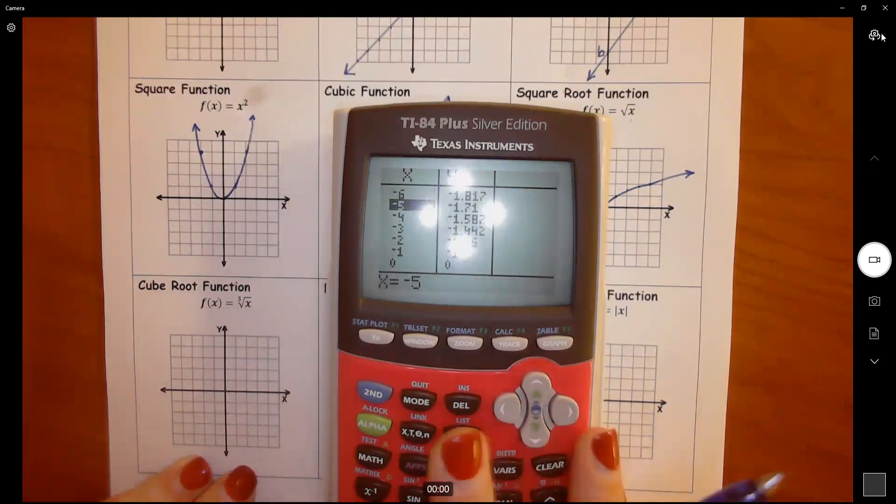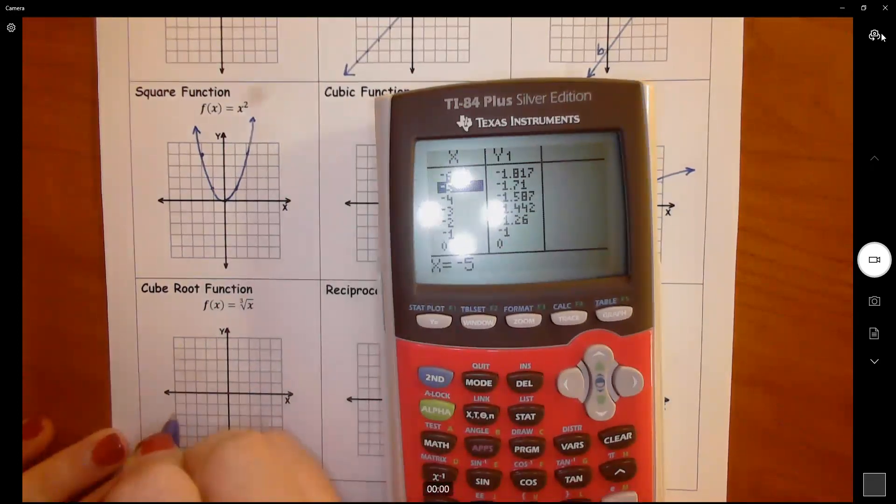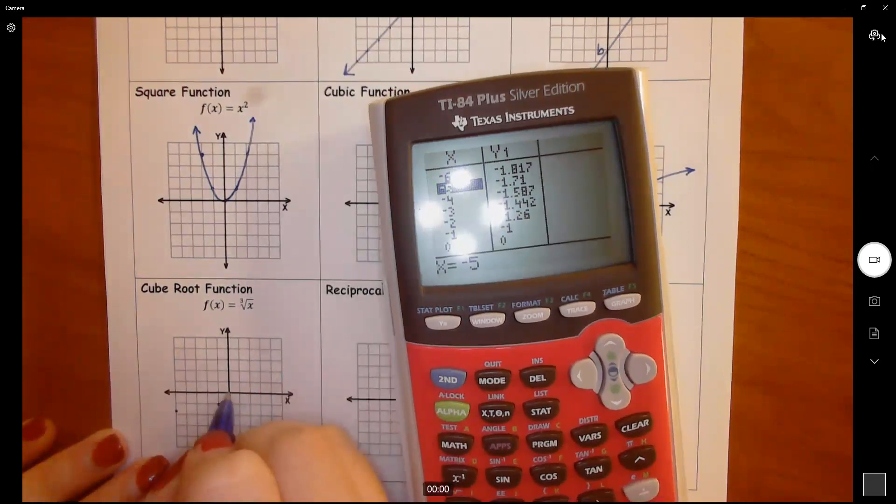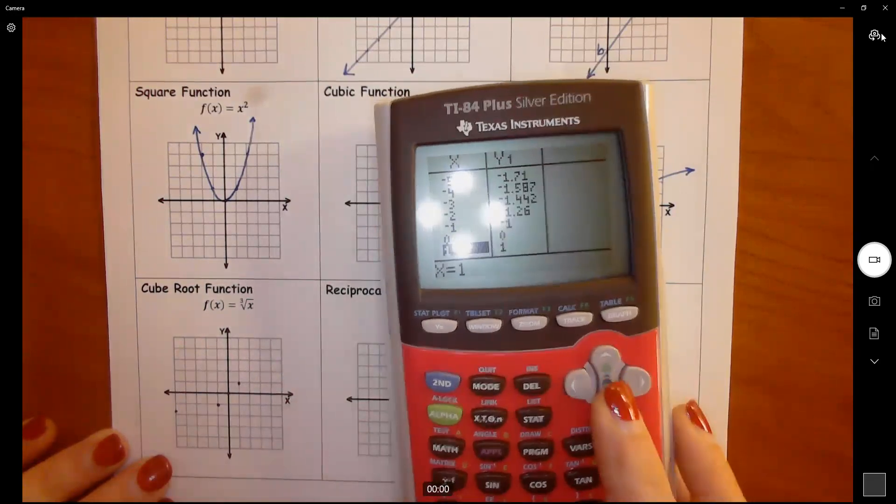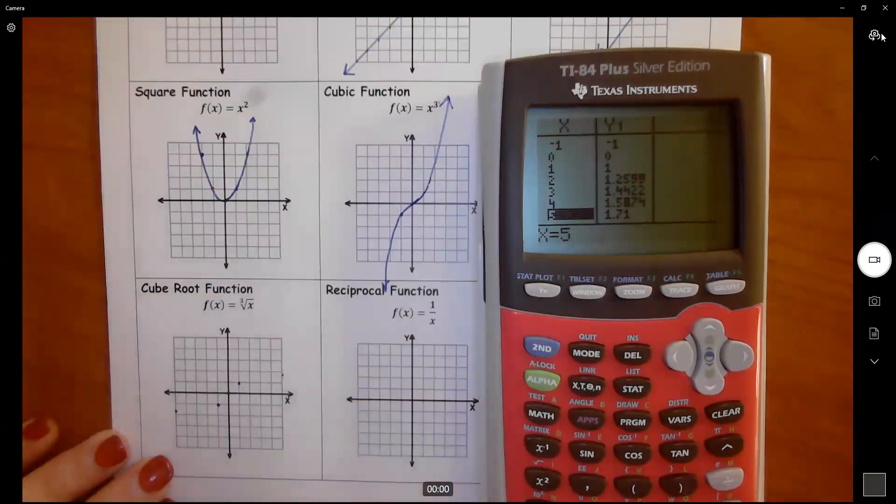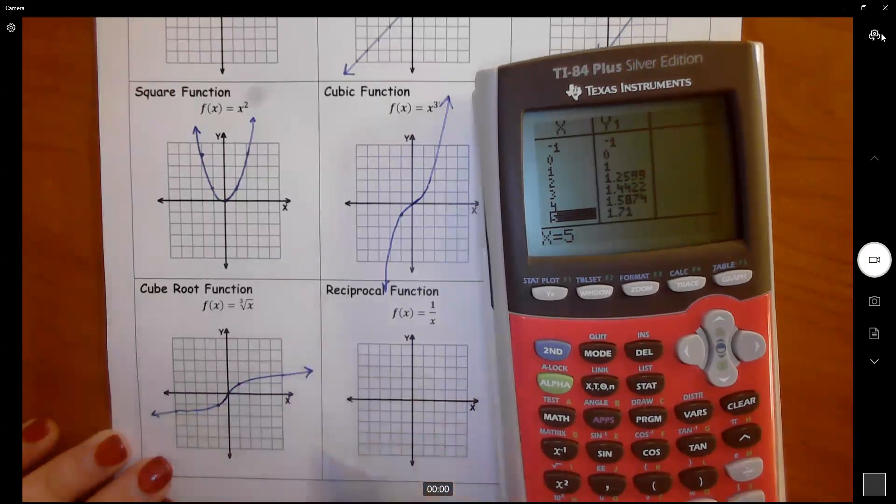So negative 5 is still less than negative 2, somewhere in this area here. We've got negative 1, negative 1, 0, 0. You should have 1, 1. And then 5 is still going to be less than 2 as well over here. Something like that.